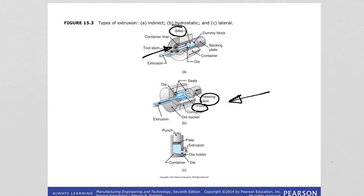A less common type is lateral or side extrusion, as shown in image C. The punch applies force to the part and it exits in a vertical direction. This is suitable for usually low melting point materials.